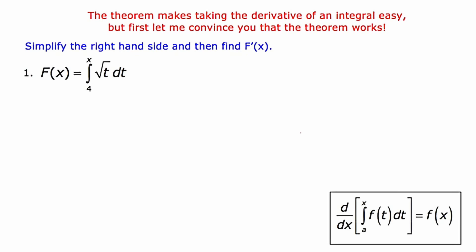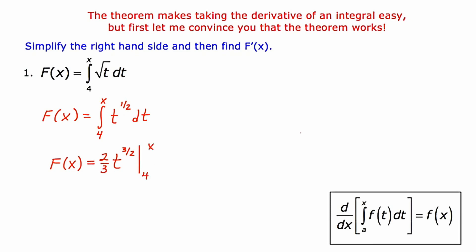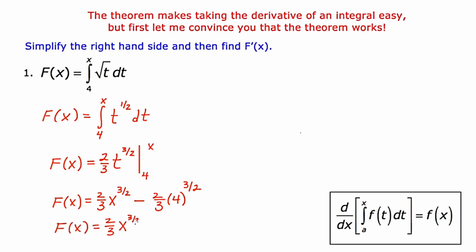I'm going to start by making a modification to the right-hand side — rewriting the square root of t as t to the one-half. The next thing I'm going to do is take the anti-derivative by raising the power by one and multiplying by the reciprocal. Then I'll plug in x for t, and then plug in 4 for t, and seek out the difference. Cleaning this up: the square root of 4 is 2, 2 cubed is 8, and 8 times two-thirds is sixteen-thirds. So I've successfully simplified the right-hand side.